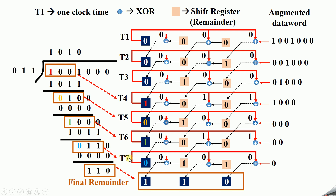T1 to T7 represents the clock times. You can find that I circle this place — this place is mapping this place, and this place is mapping this place. This place is mapping this place, and the final remainder is mapping this side.